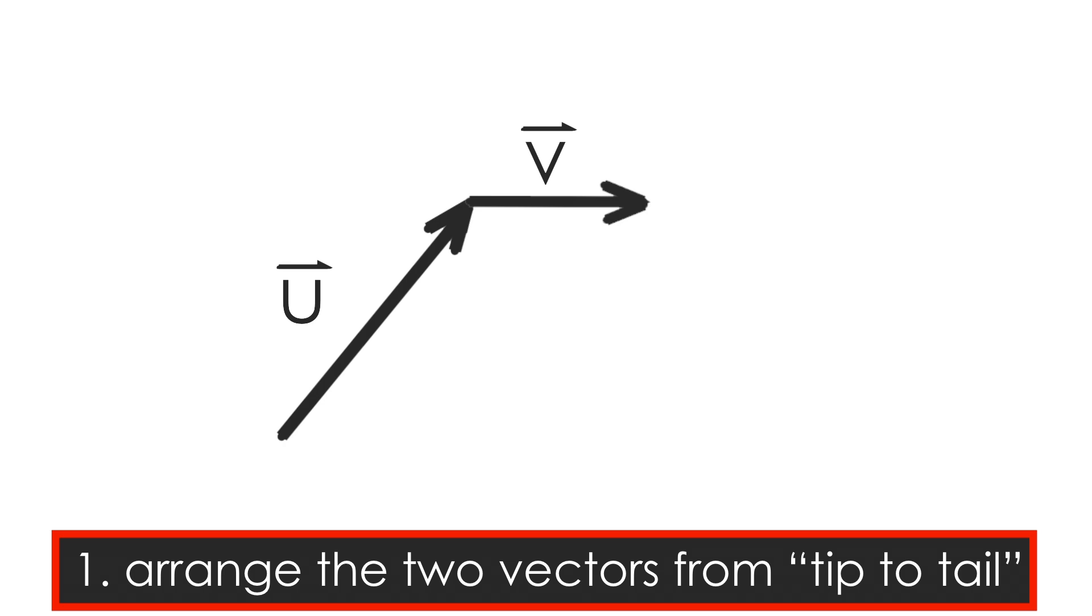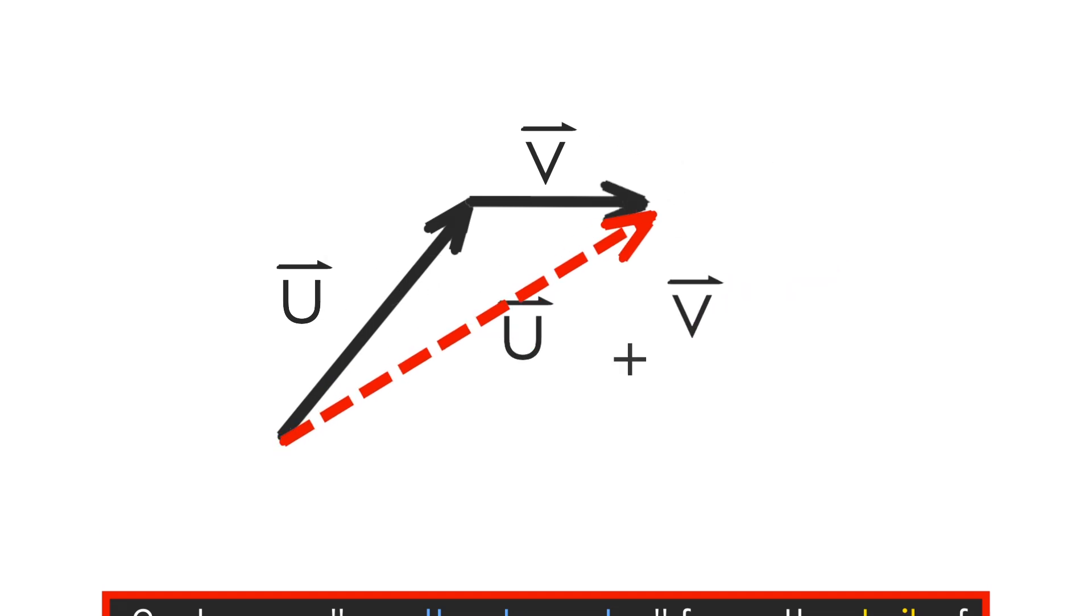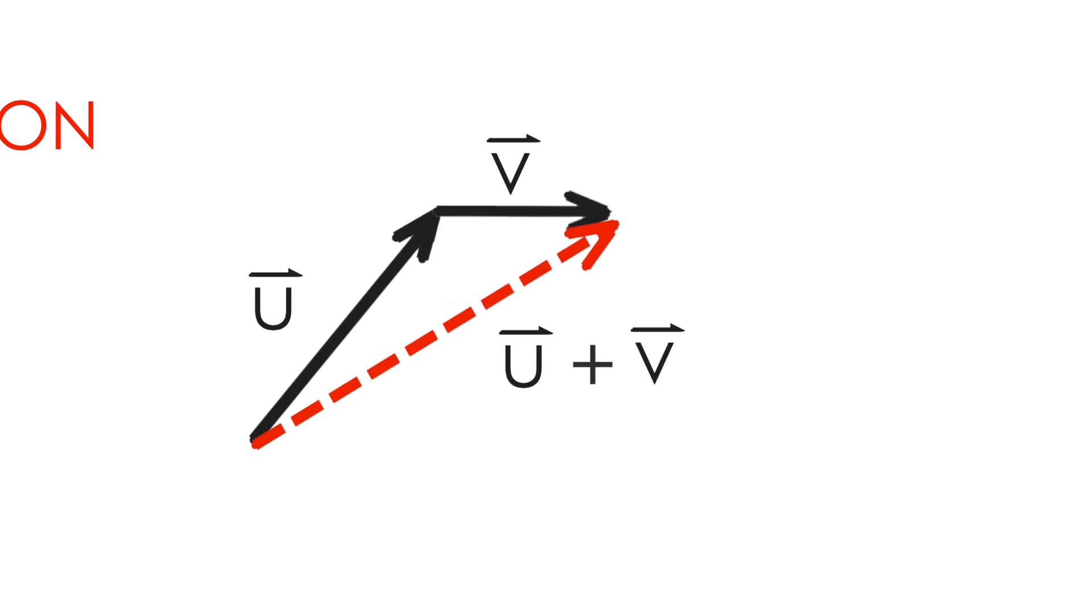Once you've aligned your two vectors from tip-to-tail, draw a vector from the tail of the first vector to the tip of the second. This is called the resultant vector, and represents the vector sum of your two vectors, u plus v.